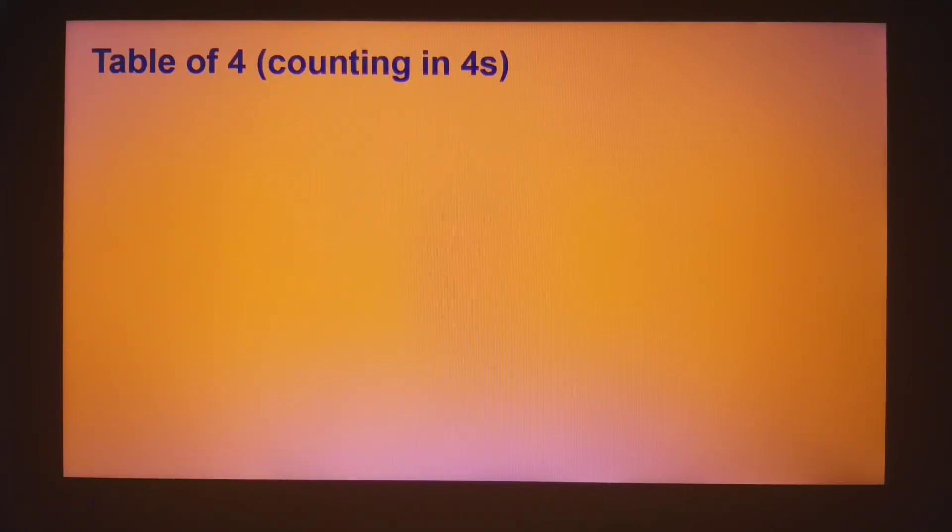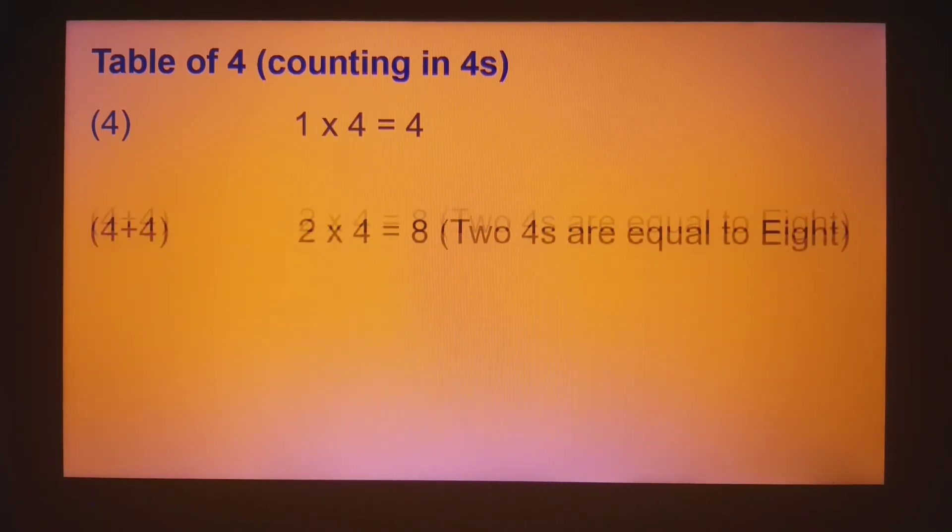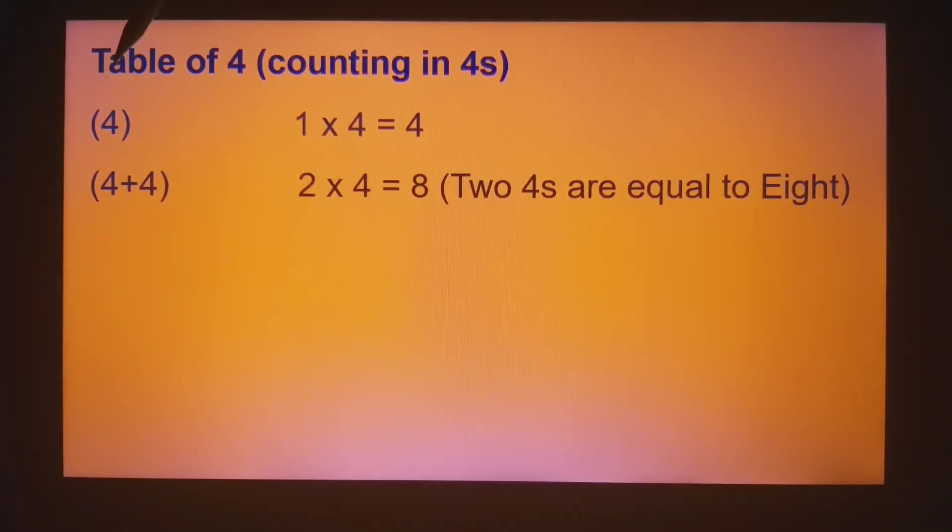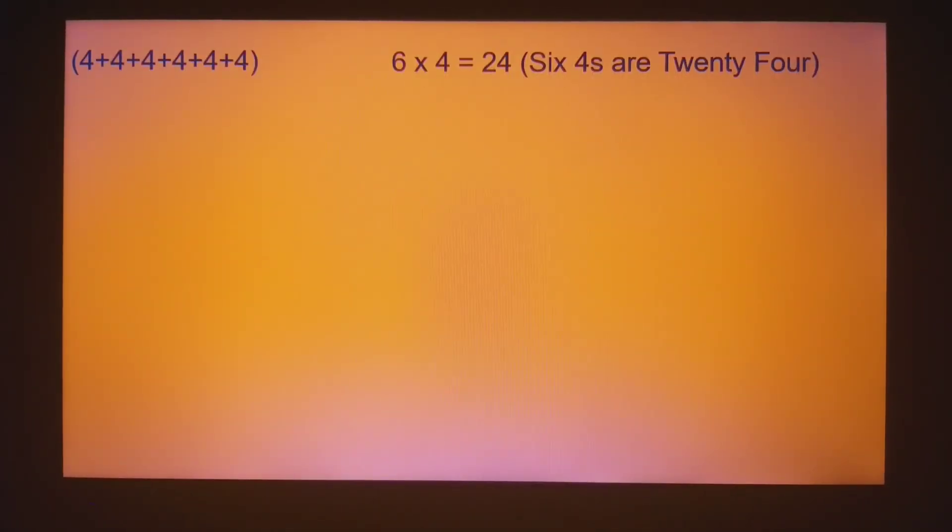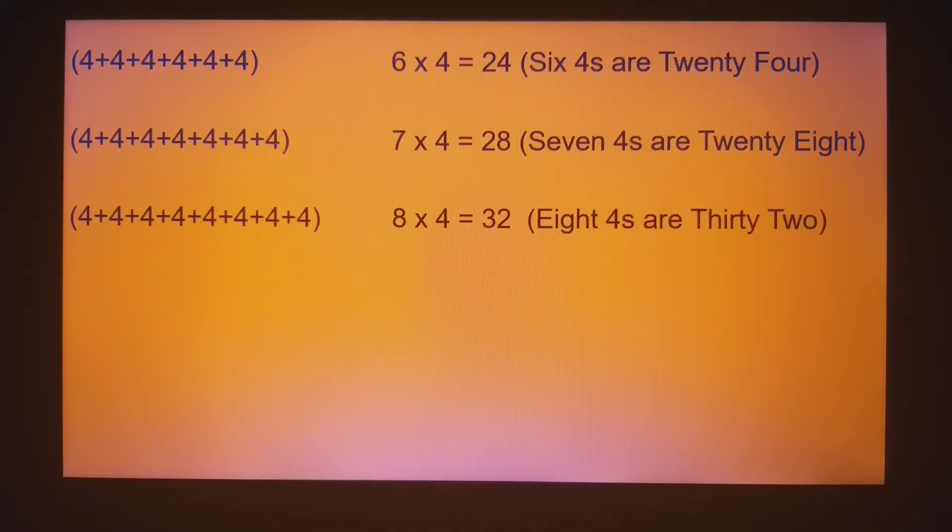The next table we want to learn is table of four, which is also called counting in fours. So in the same way, if you keep writing it by taking one four and adding number of fours each time, if we had only one four, it's one times four equal to four. If we have two fours, two times four, eight. Three fours, three times four, twelve. Four times four, sixteen. Five times four, twenty. Six times four, twenty-four. Seven times four, twenty-eight. Eight times four, thirty-two. Nine times four, thirty-six.